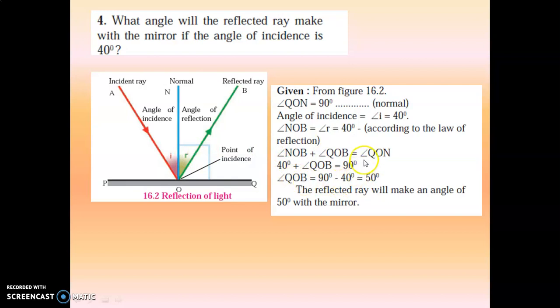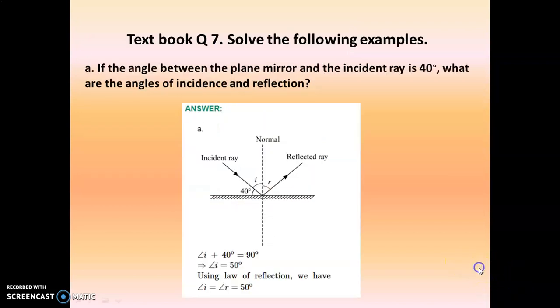This big angle QON is made up of two small angles — angle NOB and angle QOB — and equals 90 degrees. Angle NOB (angle of reflection) is 40 degrees, so 90 minus 40 degrees equals 50 degrees. The reflected ray will make an angle of 50 degrees with the mirror. Draw a diagram and remember the laws of reflection: angle of incidence equals angle of reflection.